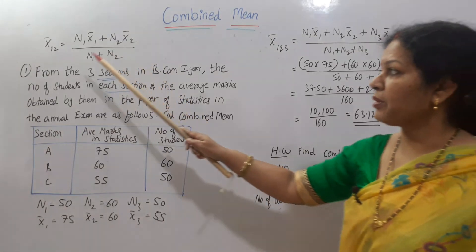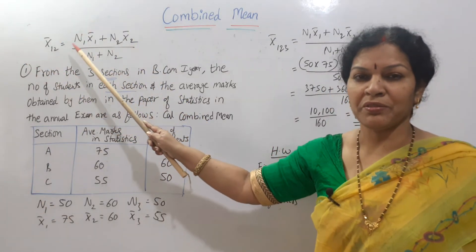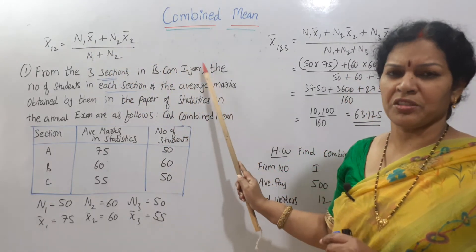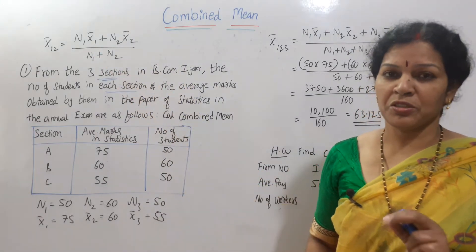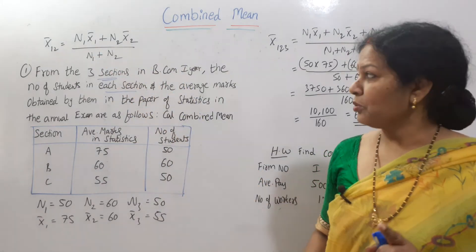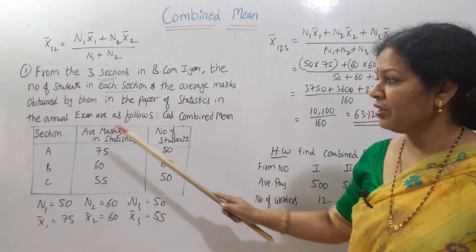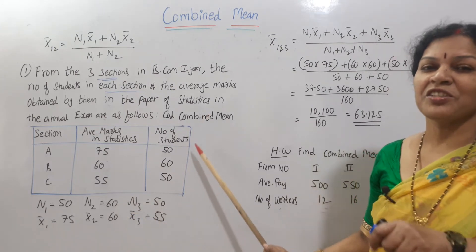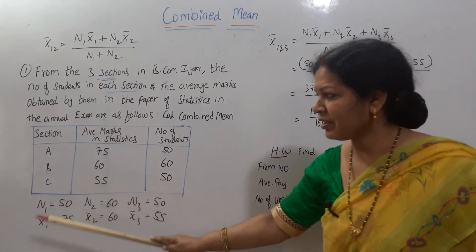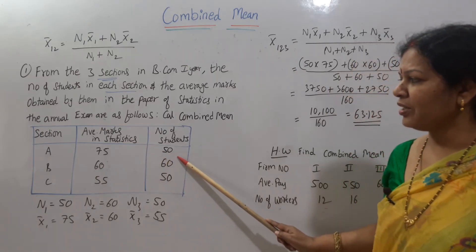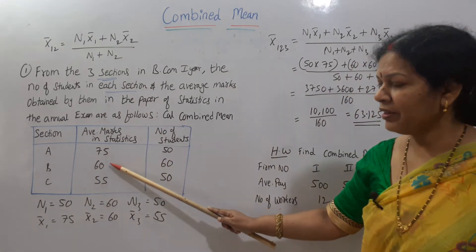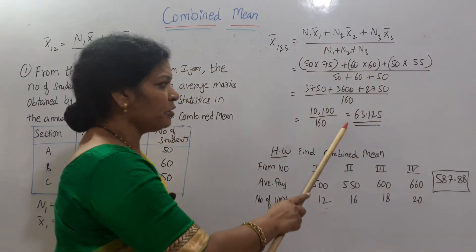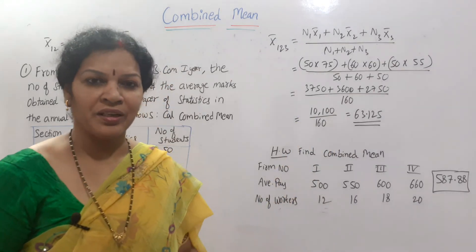Only the thing is, you have to remember the formula X bar 1 2 is equal to n1 X bar 1 plus n2 X bar 2, like how many are given you can extend it, divided by n1 plus n2. Now the formula is, problem is given here. Three sections, average marks of three section students, and in each section, how many students are there? We have written everything like this: n1, n2, n3, X bar 1, X bar 2, X bar 3. Applied in the formula, calculated, you got combined mean of 63.125, that's it.